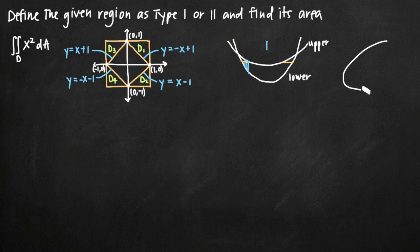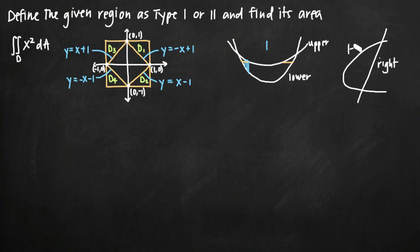On the other hand, if we have a figure like a parabola opening to the right and a line that intersects it, this region is easier to define by a rightmost bound — the line — and a leftmost bound — the parabola. It's easier to take horizontal slices of this region. Because of that, this would be a type 2 region.